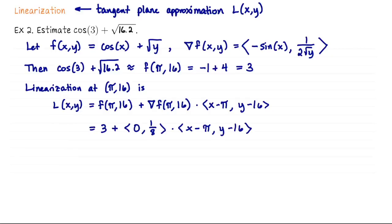Plugging in values, f(π,16) = 3 and ∇f(π,16) = ⟨0, 1/8⟩. So L(x,y) = 3 + ⟨0, 1/8⟩ · ⟨x-π, y-16⟩ = 3 + y/8 - 2 = 1 + y/8.